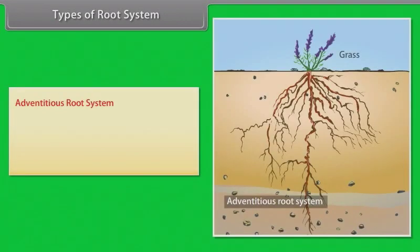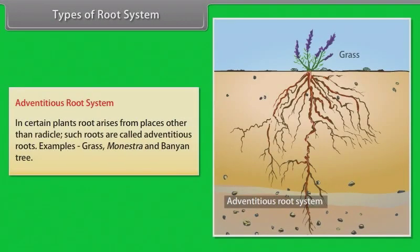Adventitious root system: In certain plants, roots arise from places other than the radicle. Such roots are called adventitious roots. Examples: grass, Monstera, and banyan tree.